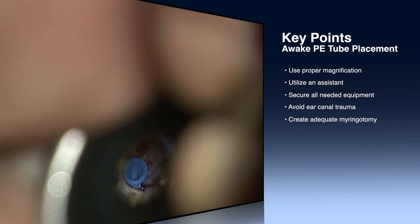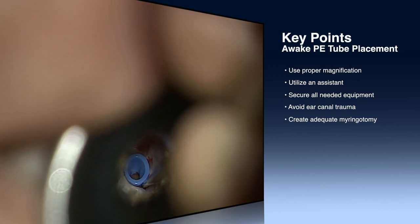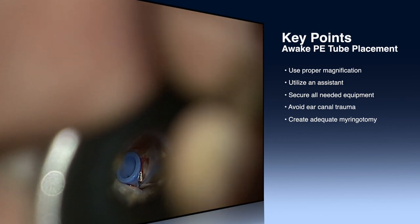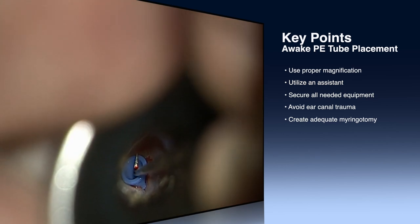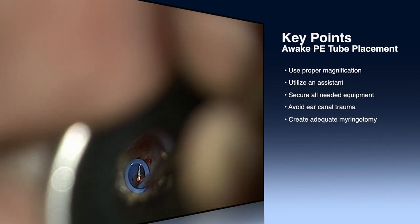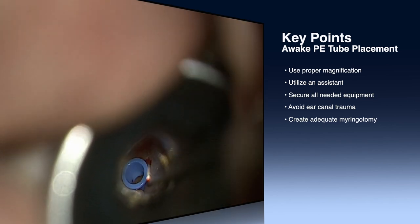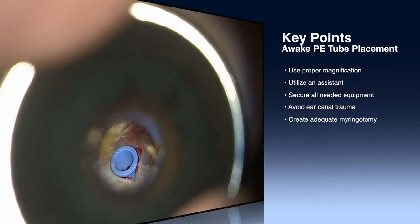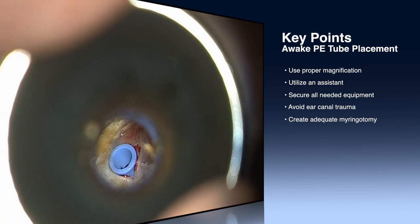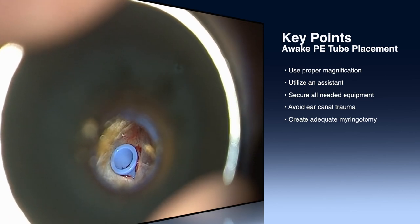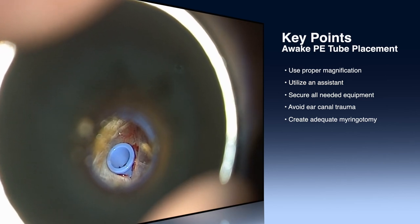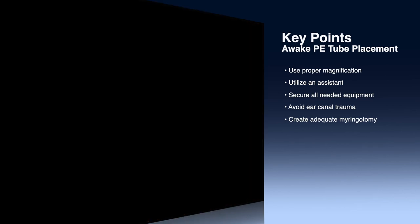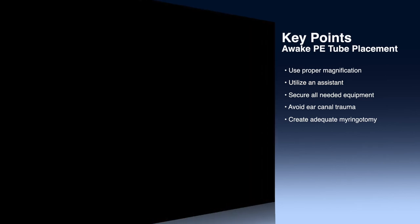Make a reasonably generous myringotomy — don't be too constrained — so that when placing the tube it doesn't spring medially into the middle ear space in an uncontrolled way. This concludes our short instructional video on PE tube placement in the awake adult.